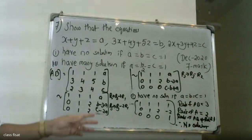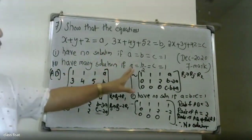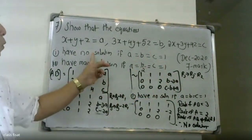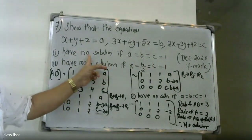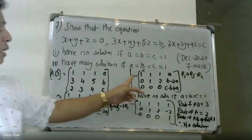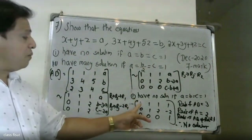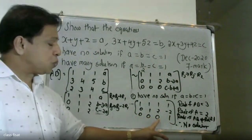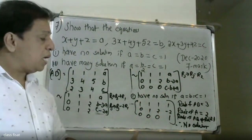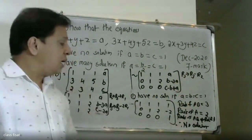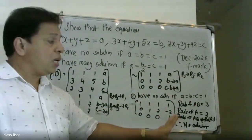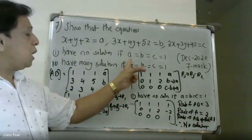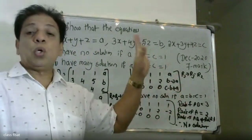The answer is confirmed. For row 1: 1, 1, 1; row 2: 0, 1, 2, minus 2; row 3: 0, 0, 0, 1. The rank of A equals 2 but rank of AB equals 3. Therefore, when a equals b equals c equals 1, there is no solution.